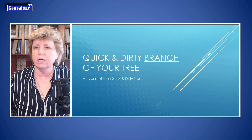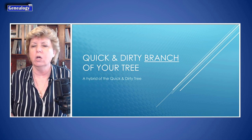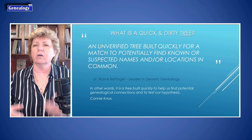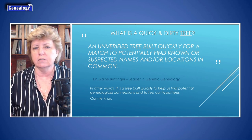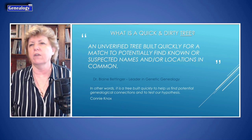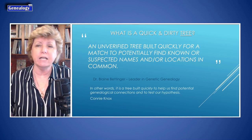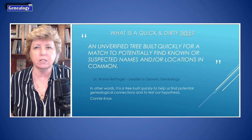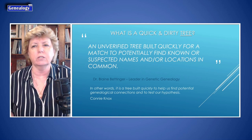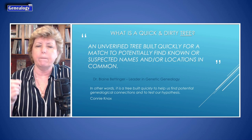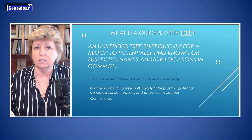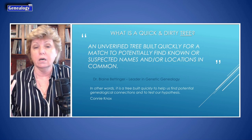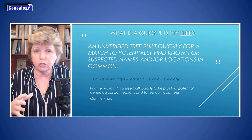So we're going to talk about a quick and dirty branch. If you've heard of a quick and dirty tree, let me explain what it is. As Dr. Blaine Bettinger said, it is an unverified tree built quickly for a match to potentially known or suspected names and/or locations in common. The idea is to create a quick tree — unverified, no records attached — just importing it from other members and adding it to your private unsearchable tree.